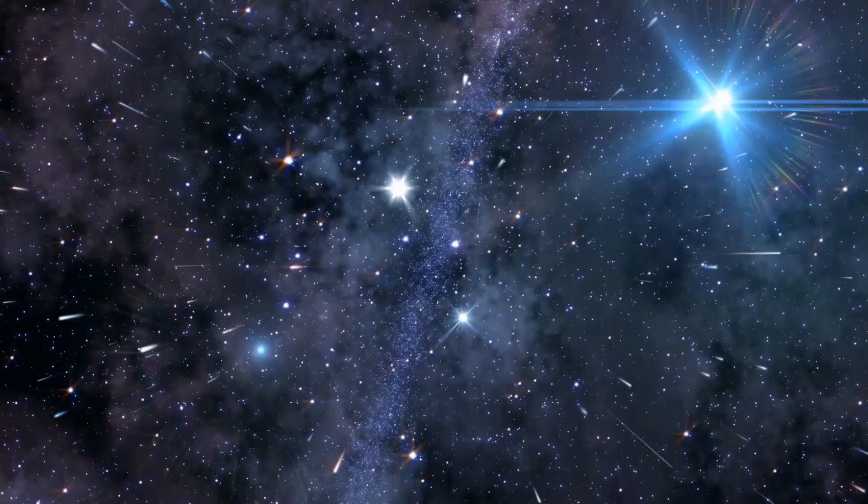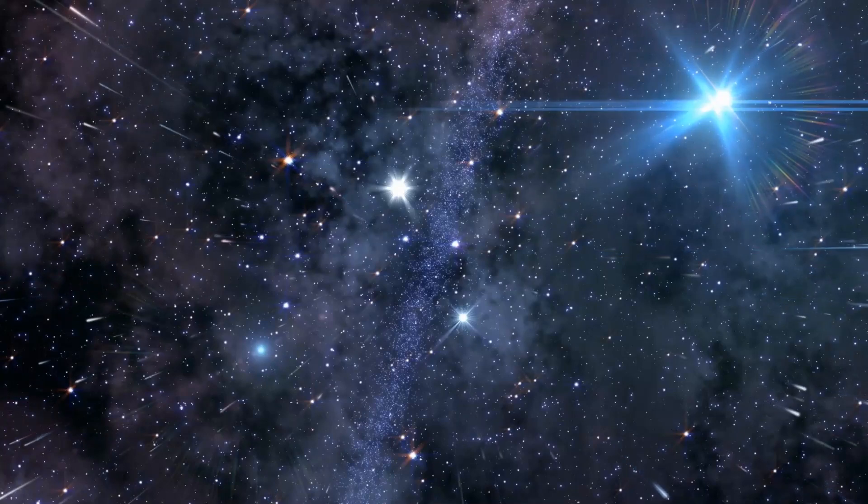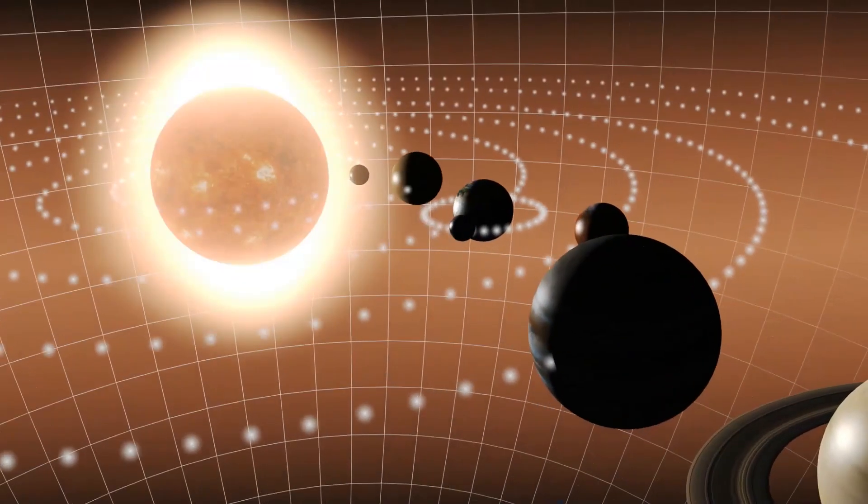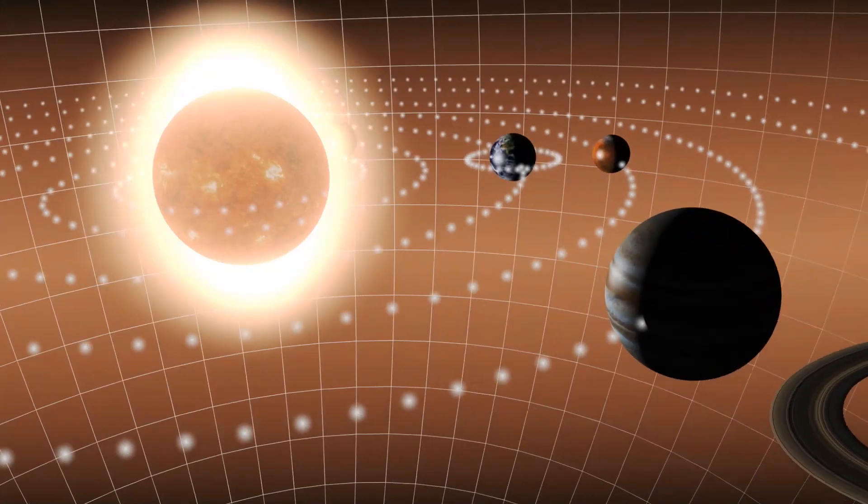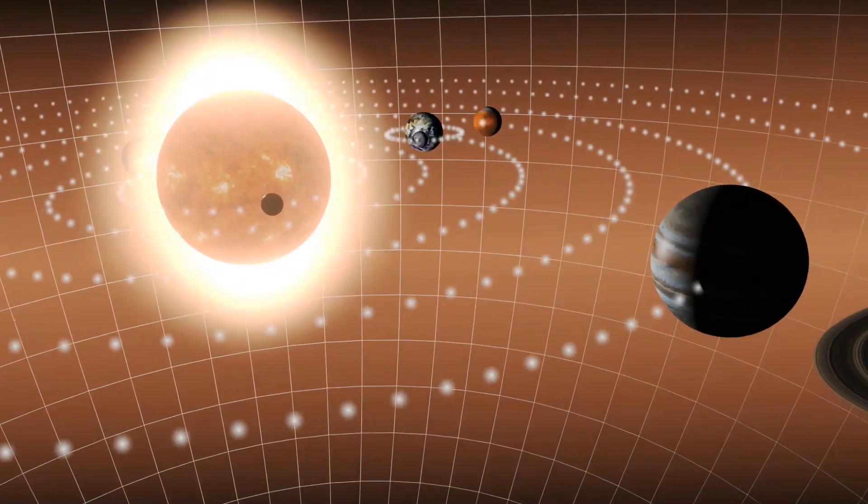Even though Voyager 2 was the first one to launch from Earth, the route it took to the stars meant that it would be the second in the race to reach the heliosphere. The scope of the mission was to study the outer part of the solar system and gain knowledge about the outer planets and their moons.